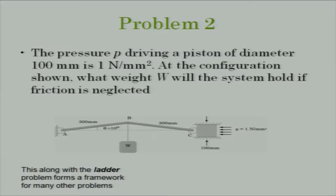Let us go to this second problem. What we have is a mechanism with points A, B, C. AB is a two-force member and BC is a two-force member.